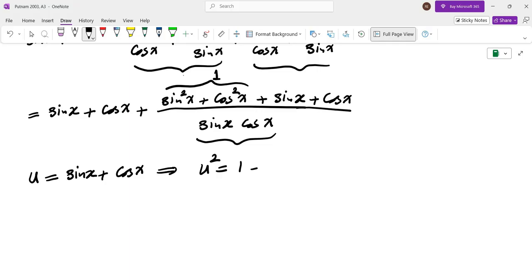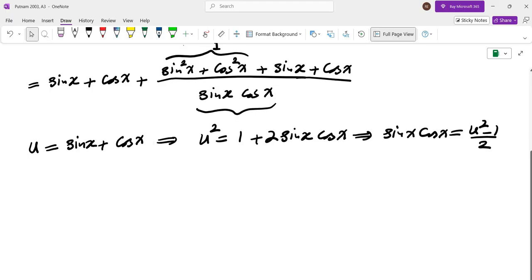If we square that, we get one plus two sine x cosine of x. So that means sine x cosine of x is u squared minus one over two. Let's rewrite everything in terms of u.